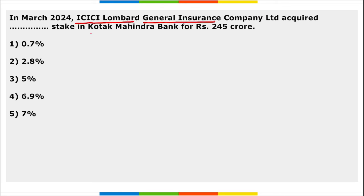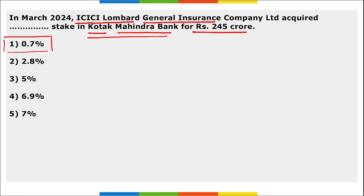ICICI Lombard General Insurance Company Limited acquired a 0.7% stake in Kotak Mahindra Bank for ₹245 crore. The company also informed exchanges about equity share allotments under the ICICI Lombard Employee Stock Option Scheme of 2005 — 26,270 shares allotted, each valued at ₹10.